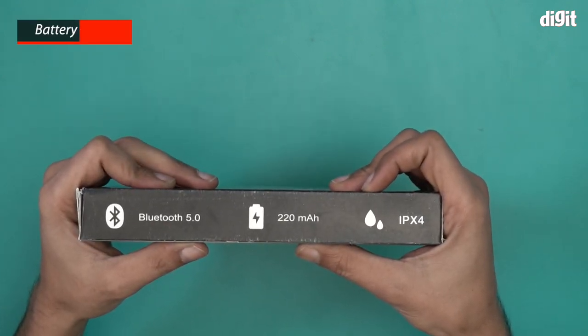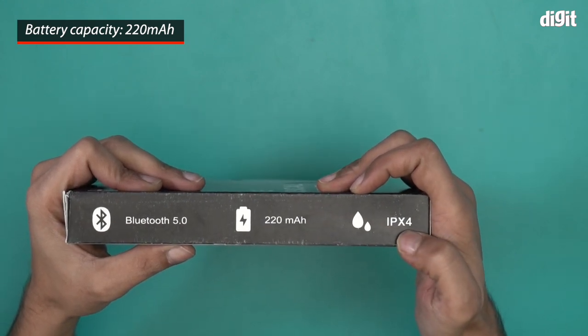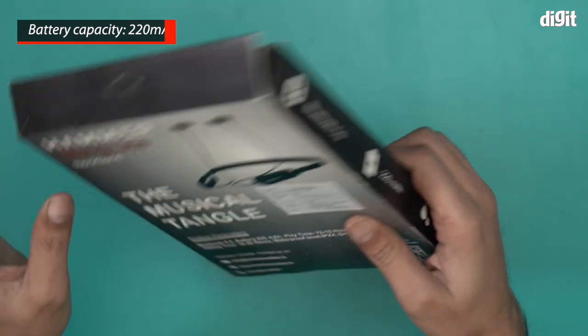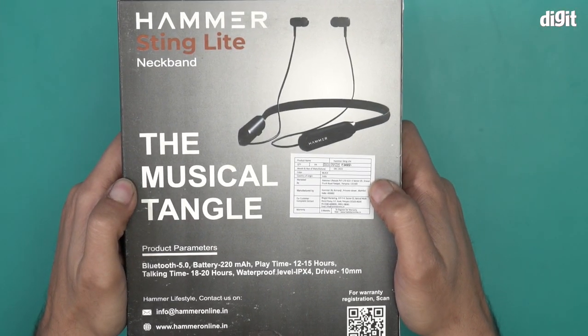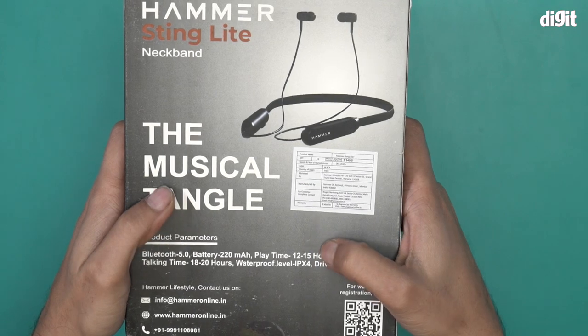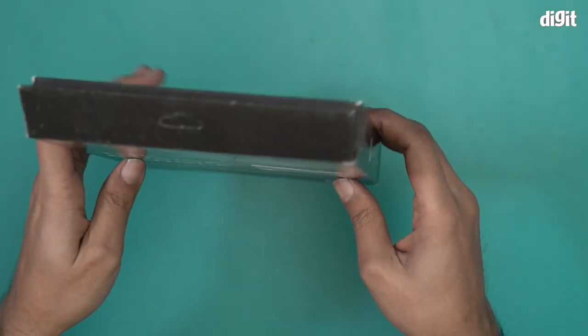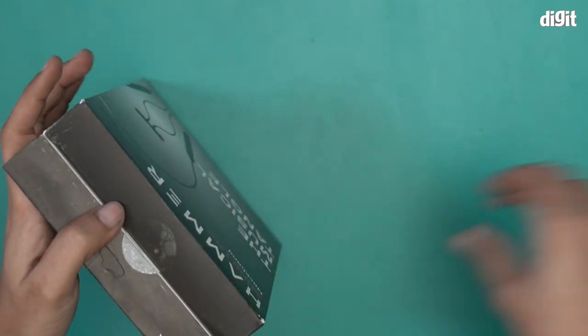It has a 220 mAh battery and also comes with IPX4 sweat and water resistance. Some product parameters are also mentioned over here, like Bluetooth 5.0, 220 mAh battery, playtime 12 to 15 hours - basically everything that is mentioned on the side. I will now open this box and show you what's inside.